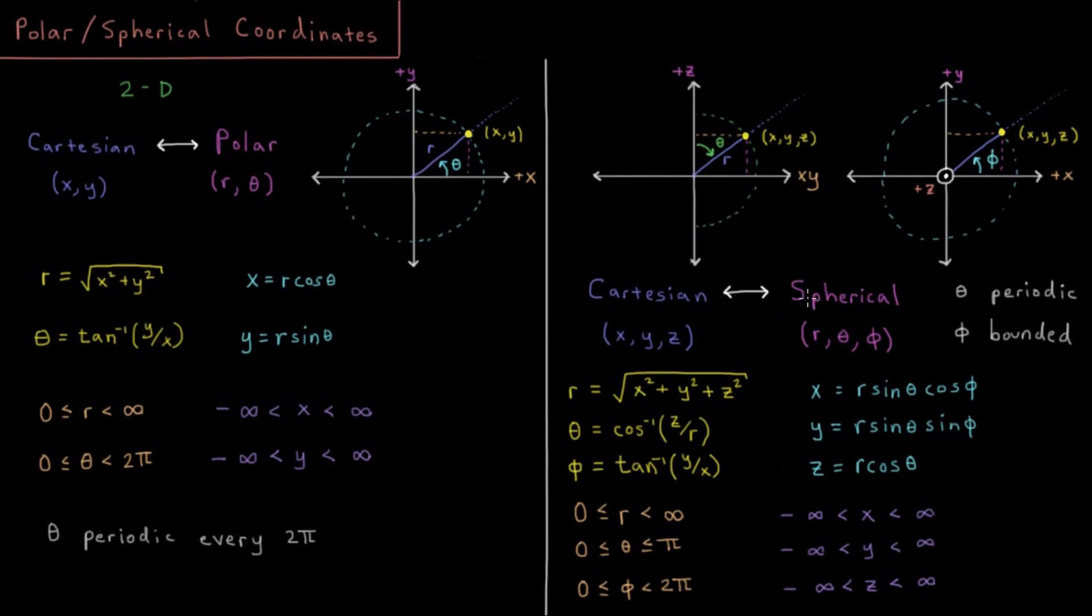Or we could represent these as spherical polar coordinates where we have r, theta, and phi. So r is very similar to the analog in two dimensions. Through the Pythagorean theorem it ends up being the square root of x squared plus y squared plus z squared now. You can work yourself through that by doing it first in the x, y plane, and then the hypotenuse in that plane up to the value in z.